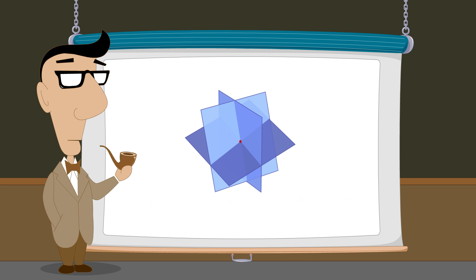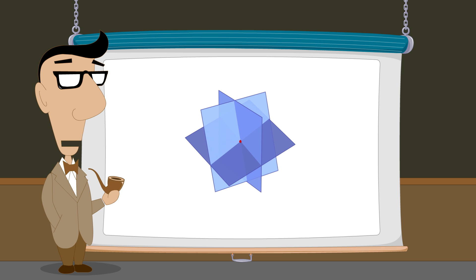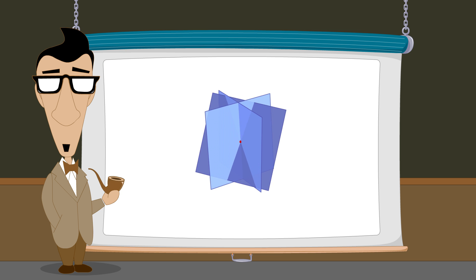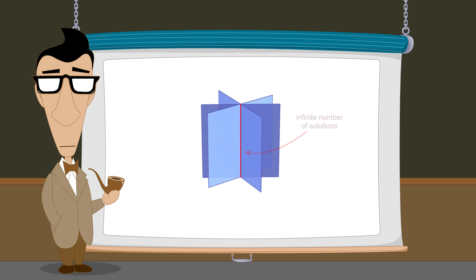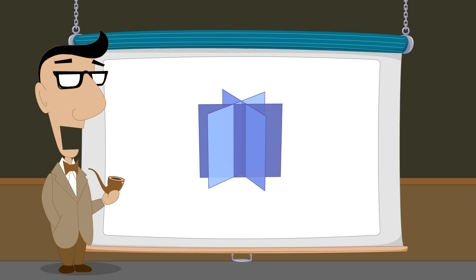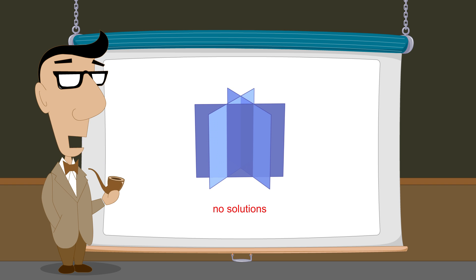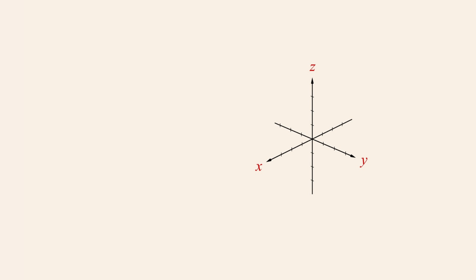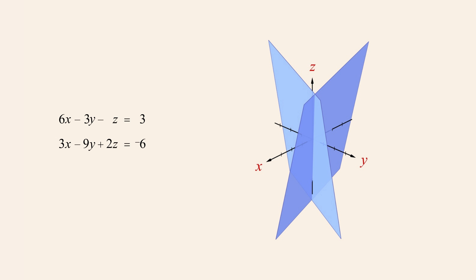We will start by solving a system composed of three planes which intersect at a single point. We will then change one of the planes so that all three planes intersect along a line and see how the results differ. Finally, we will reorient the plane again to create a system with no solutions and see what happens when we try to solve the system. We will start with a system of three equations whose graph is composed of three planes intersecting at a single point.